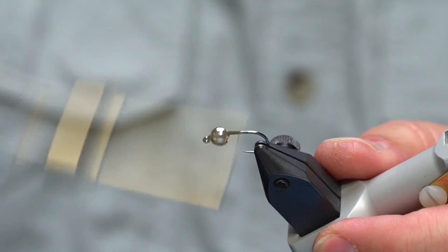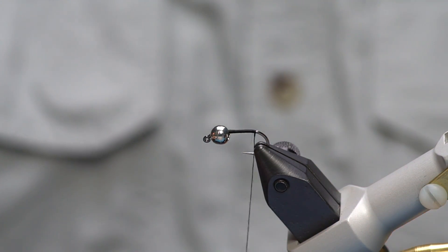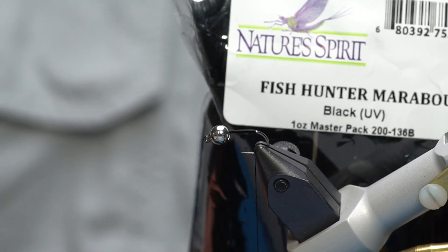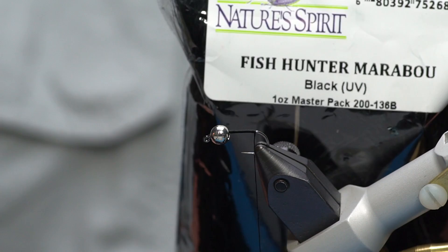We're going to rotate the thread back down to the bend and I'm going to tie in a marabou tail. This is Fish Hunter marabou in black UV. Regular black marabou will probably work well too.